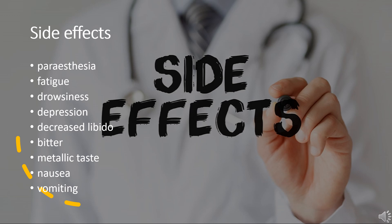Common adverse effects of acetazolamide include paresthesia, fatigue, drowsiness, depression, decreased libido, bitter or metallic taste, nausea, vomiting, abdominal cramps, diarrhea, black stool, polyuria, kidney stones, metabolic acidosis, and electrolyte changes such as hypokalemia and hyponatremia. Less common adverse effects include Stevens-Johnson syndrome, anaphylaxis, and blood dyscrasias.